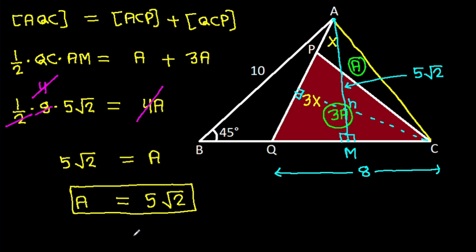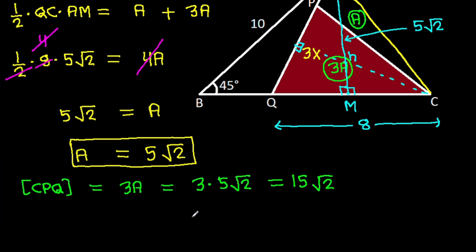And now, area of CPQ is 3A, which is 3 times 5 times root 2. So we get area of CPQ is 15 times root 2.